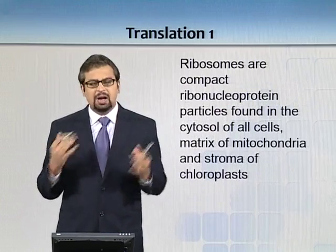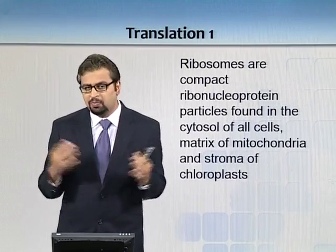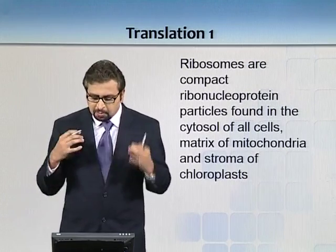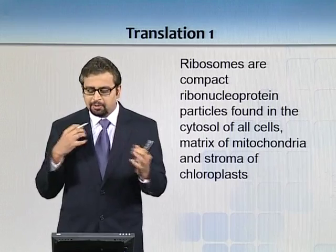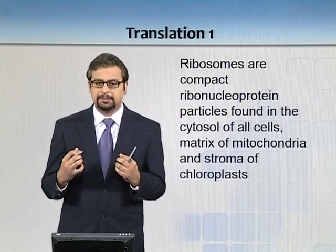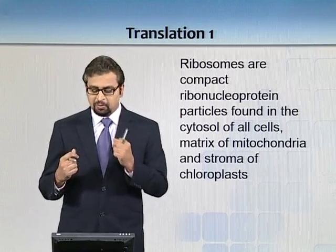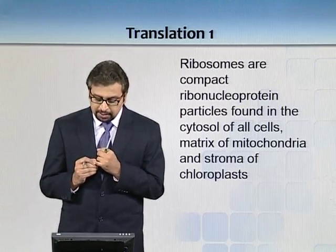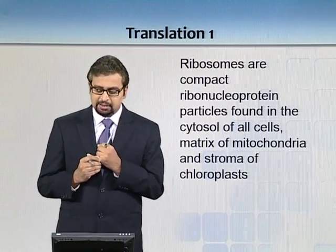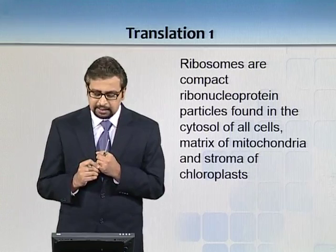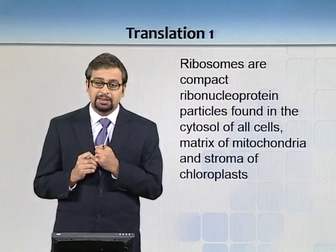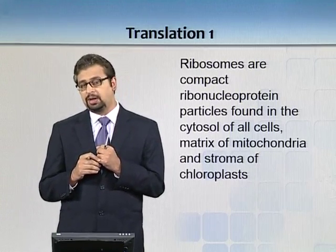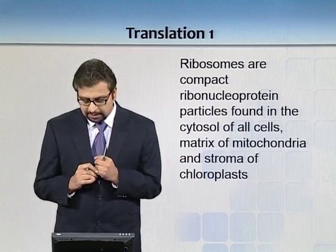What are ribosomes, what do they look like, and what are they made up of? Ribosomes are compact ribonucleoprotein particles. They are found in the cytosols of all cells, in the matrix of mitochondria, and in the stroma of chloroplasts. There is a reason to tell you where ribosomes are located.